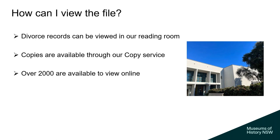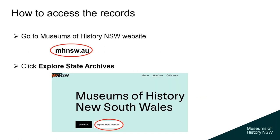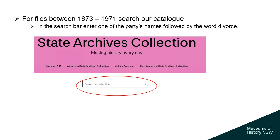To access the records, go to Museums of History NSW's website, mhnsw.au, then click Explore State Archives. To search the catalogue for files 1873–1971, enter one of the party's names followed by the word 'divorce' in the search bar. For example, if the divorce you're looking for is Smith, enter 'Smith divorce' and the results for that name will come up — and for Smith, there will likely be quite a lot of divorce files found.